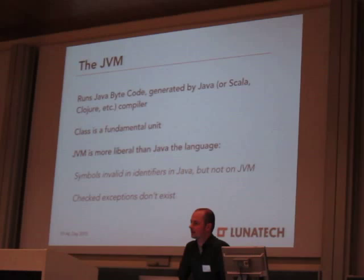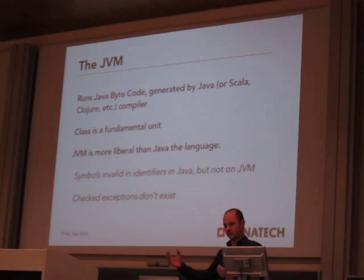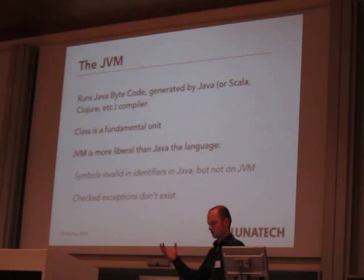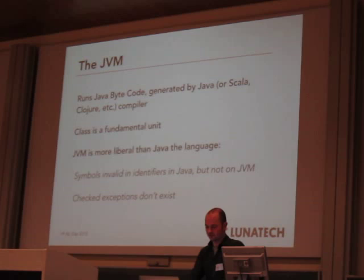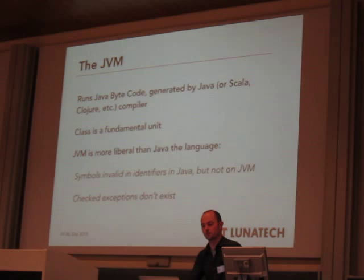What do I mean by interoperable with Java? It means that from Scala you can call Java methods, you can extend Java classes, and also the other way around. Some things in Scala don't exist in Java, so if you want to create a Scala library usable from Java, you must make sure its interface is something that can be conveniently used from Java. It also means we can use Java's existing infrastructure like Maven or Ivy, which is also what Scala generally uses.